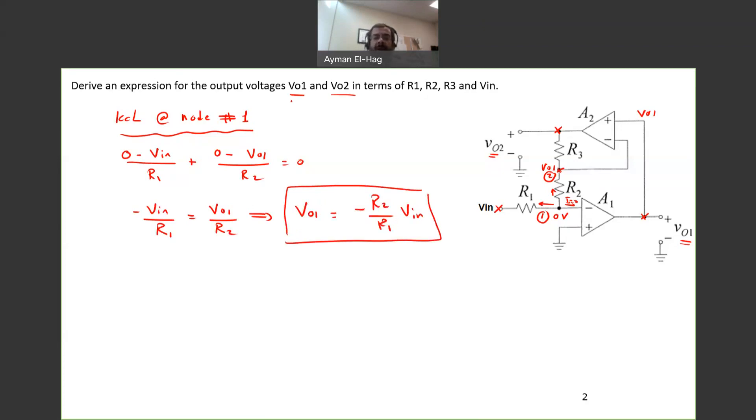We expressed VO1 in terms of the resistors and Vn. So this is the first one.